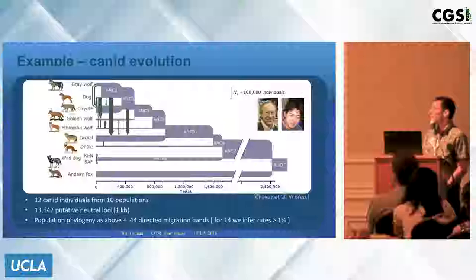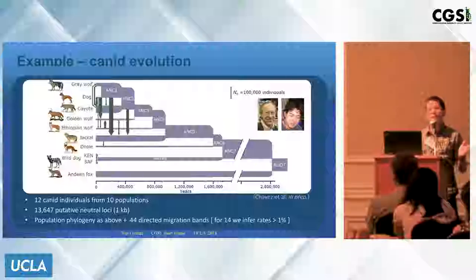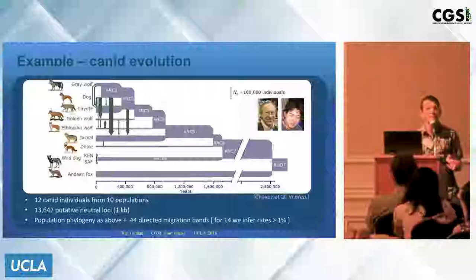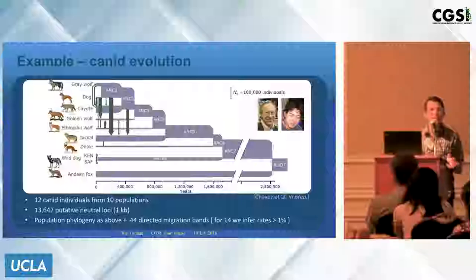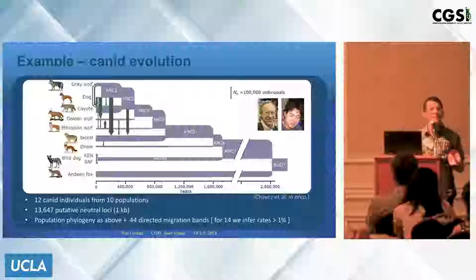First, the issue of migration bands: we throw a lot of migration bands into the model and say this set is significant, but we don't really have a statistical test. We just put a threshold on inferred rates and don't draw things below it. That's not very rigorous. And there's a more problematic issue: the topology of the tree. We don't actually infer the tree — that's part of the input for GFOX.